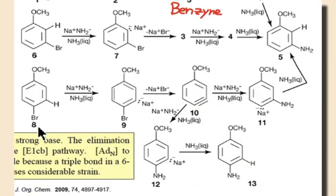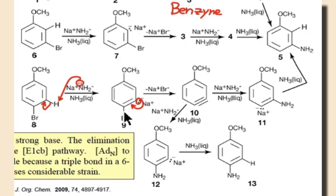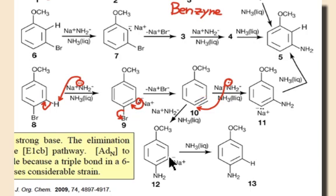Now let's look at the para-substituted starting material and how it affords two different products. Again, deprotonation and elimination occur to create the benzyne intermediate. The resulting nucleophilic addition step can then occur at either carbon of the alkyne. This yields the amine group in the para position in structure 13 and in the meta position in structure 5. In theory, the triple bond of the benzyne could be attacked at either carbon, though in practice this isn't always the case. The most important point is that the formation of the benzyne intermediate helps explain why the incoming nucleophile does not always add to the carbon that bears the original leaving group.